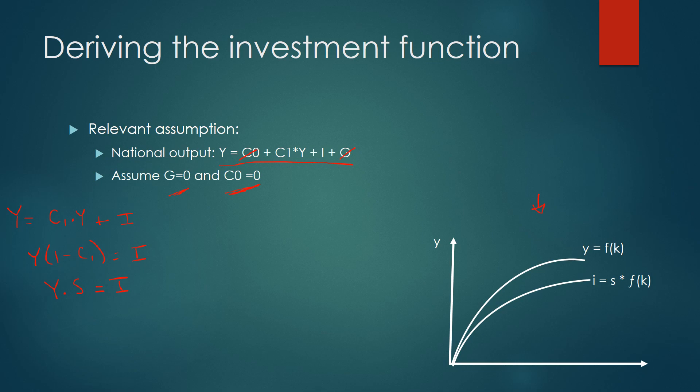And then we can say, well, actually, let's find the investment per person. So let's just say that investment per person is equal to lowercase i. We can say that is equal to output per person multiplied by the savings rate. And therefore, we can rewrite the output per person as F(k) as found over here. So we can write investment per person is equal to savings rate multiplied by F(k).